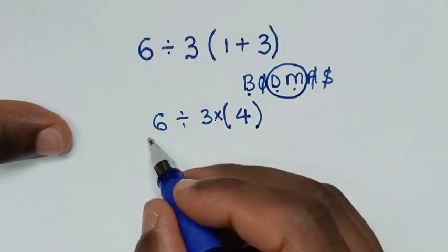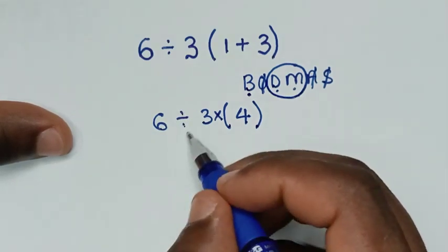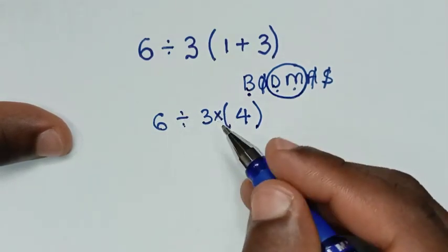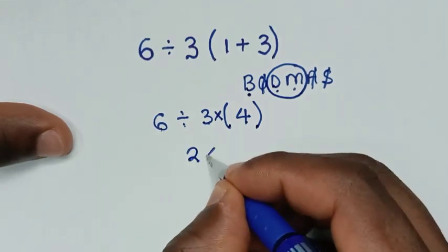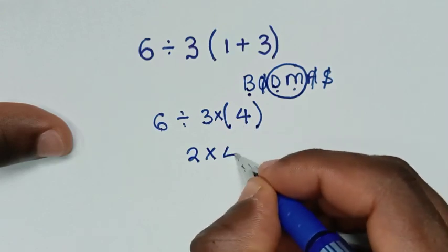Now from this our problem is that division then multiplication, so we'll do this division of 6 divided by 3 which is 2, then times this 4.